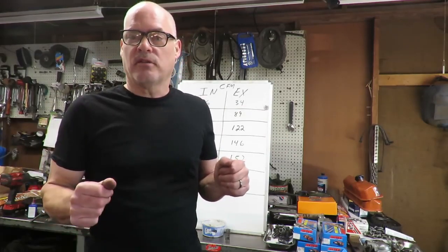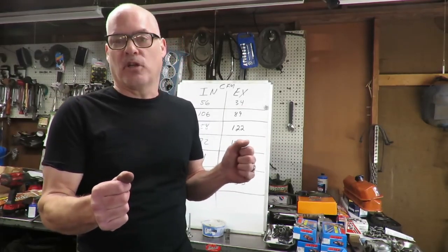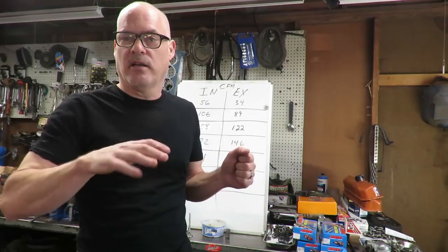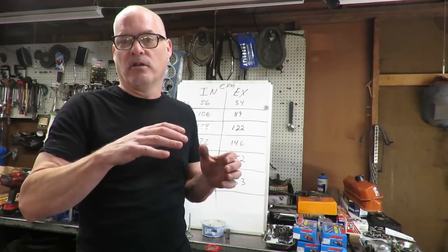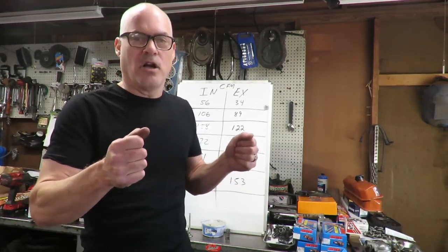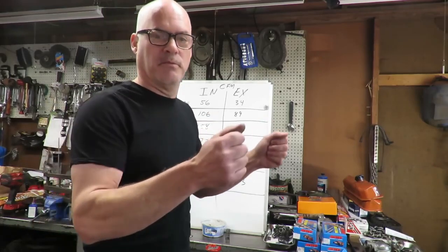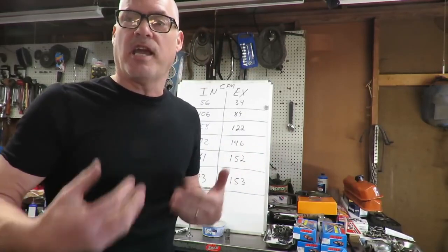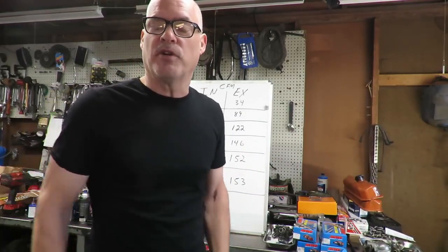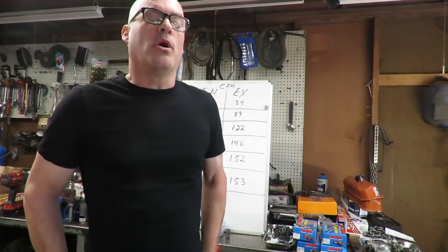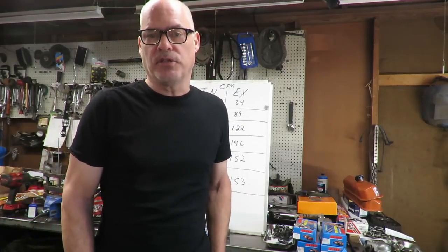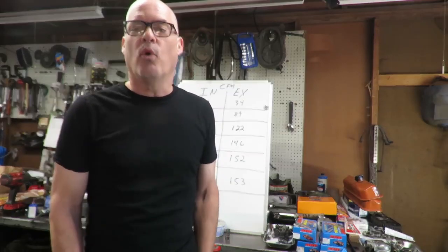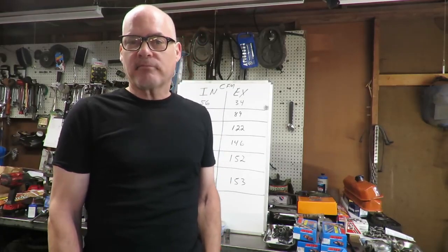When you get into big duration cams, there's a lot to consider. If you have an automatic transmission, you have to put in a higher stall speed converter. In the cam book they'll say 'this is the biggest cam you can run with a stock converter' — the next cam up with bigger duration requires a high stall speed converter. With a stock type torque converter and too much duration, you get that rough idle at a stoplight and the car will surge. If the car is surging at a stoplight, your cam is too big for the stall speed of your converter — you need to step up to a bigger converter.